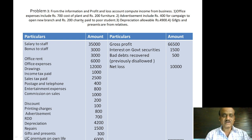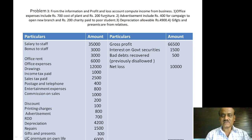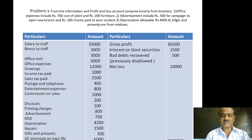The first information: office expenditure includes cost of plant Rs.200 and cost of furniture Rs.700. Advertisement includes Rs.400 for campaign to open new branch and Rs.200 paid as charity to poor students.